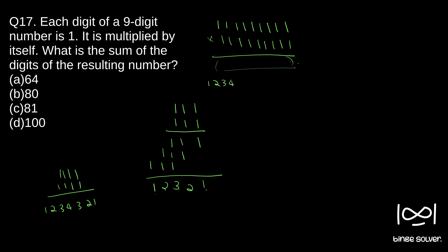Similarly, if you take nine ones, the result will be 1 2 3 4 5 6 7 8 9 8 7 6 5 4 3 2 1. So taking the product of the nine-digit number of all ones gives us this symmetric sequence as the result.